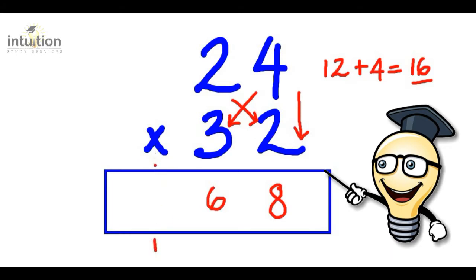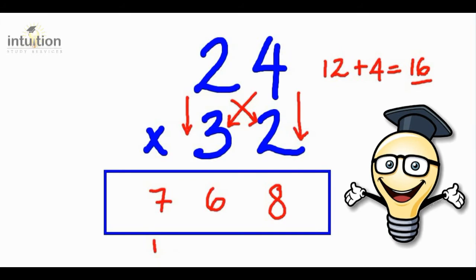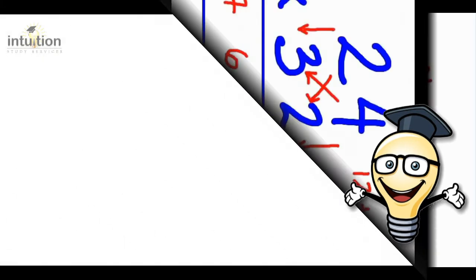Now some people prefer to put the 1 on top over here, but that's personal preference. Okay, so to get the final answer, we do the final down. So we go down, so that's 2 times 3, which is 6. And then we've got to add this 1 here. So that gives us 7. So the answer is 768.